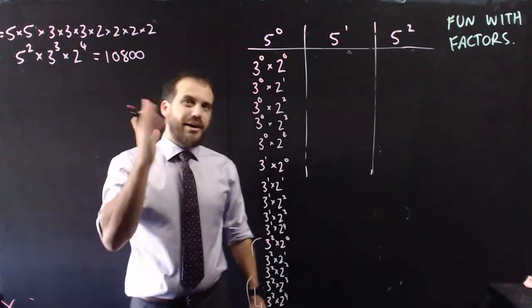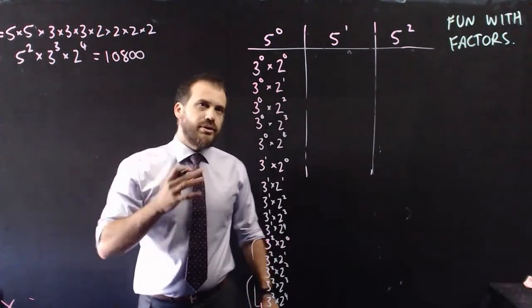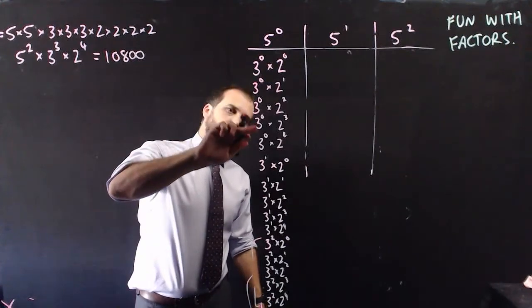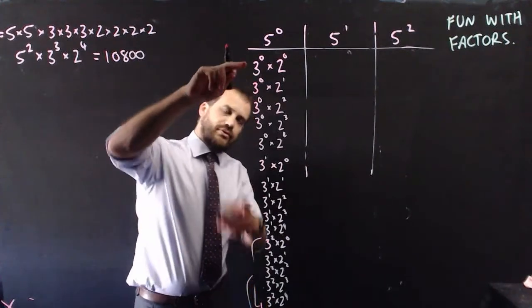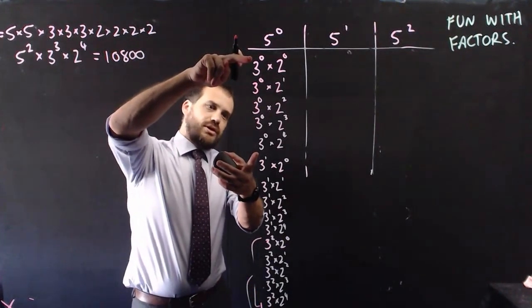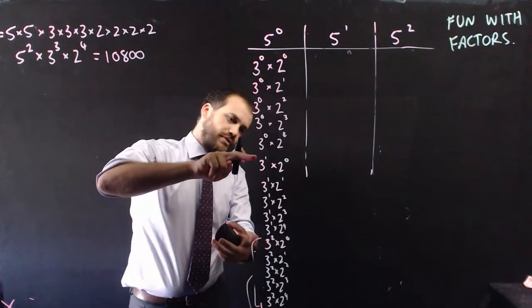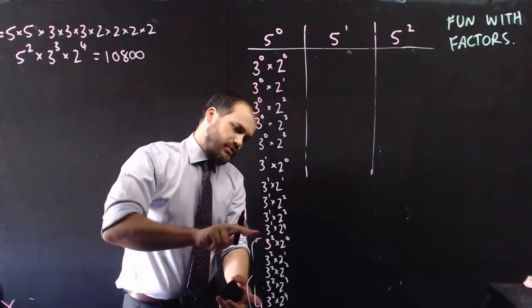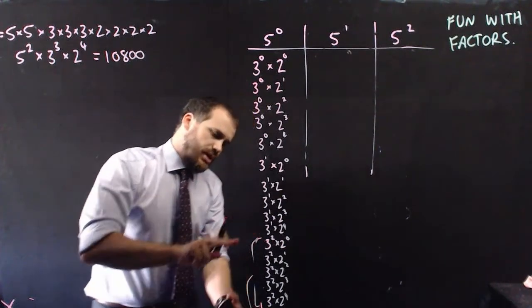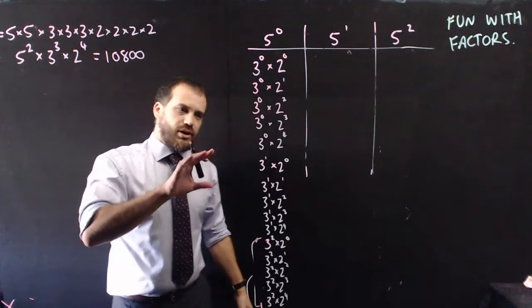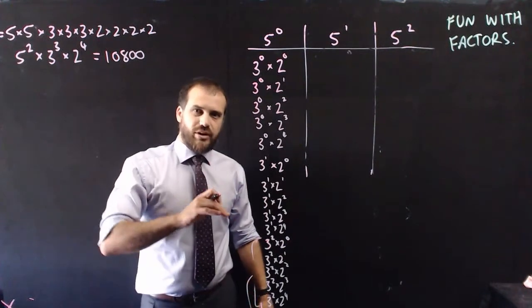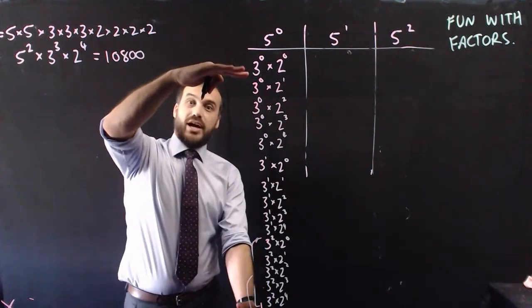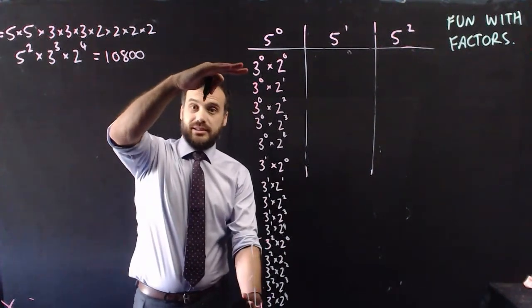So it's a big long list. How many though? Well, there are 5 options for 3 to the 0's, 5 for 3 to the 1's, 5 for 3 to the 2's, and 5 for 3 to the 3's — that's 20 different factors in this list.